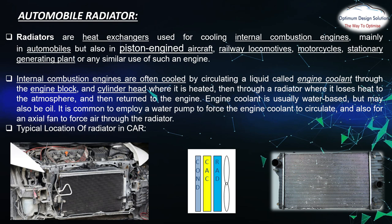How does it work? An internal combustion engine is cooled by a circulating liquid called engine coolant, which flows through the engine block and cylinder head where it is heated, then through the radiator where it loses heat to the atmosphere, and then returns to the engine. Simply, the engine coolant carries the heat of the engine and radiates it to the atmosphere using the radiator. This coolant is circulated by using a water pump.